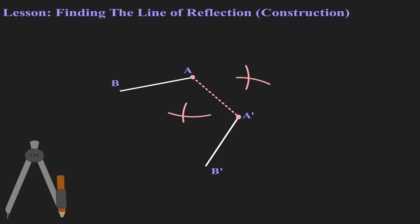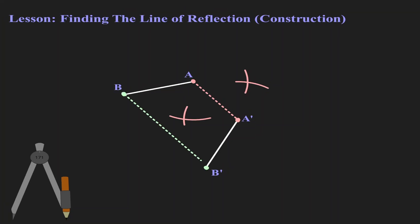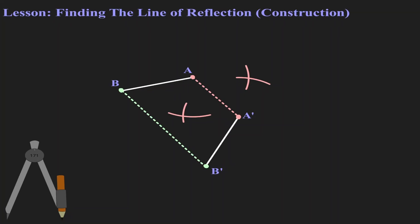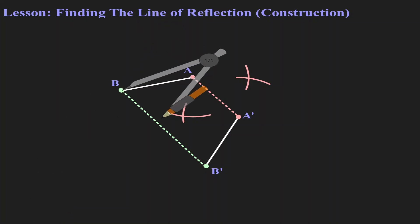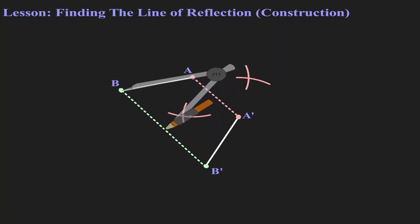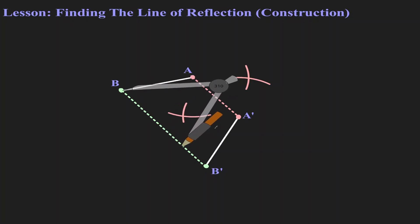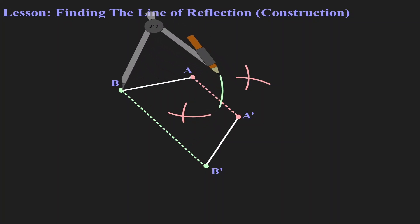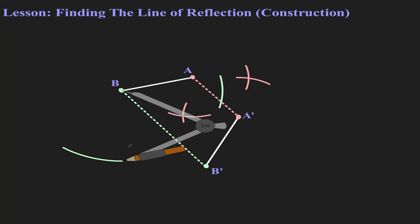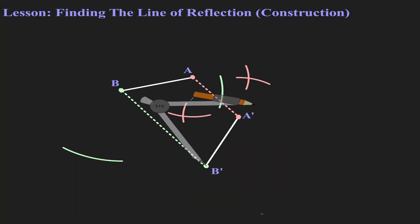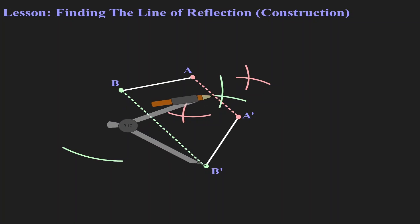Let's repeat the same process for point B and B'. Let's start by connecting those points. Now let's move our metal leg to B and open it up more than half the distance from B to B'. So this is about half the distance — let's open it more than half. Let's create a mark on the top and a mark on the bottom. Without changing the length of my compass, now let's move the metal leg to B' and look for that intersection on the top and bottom.